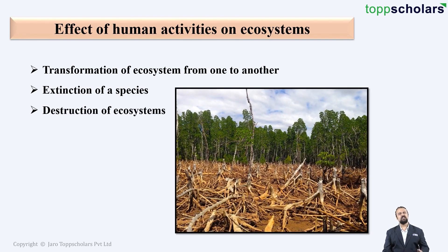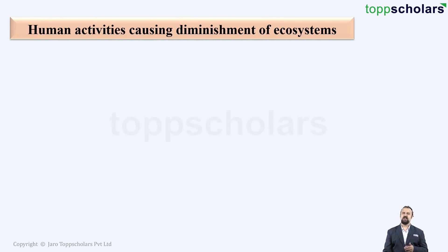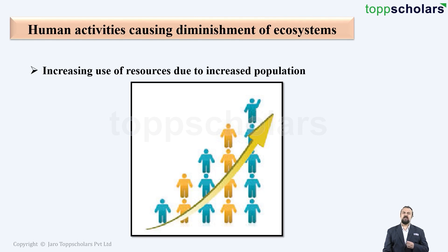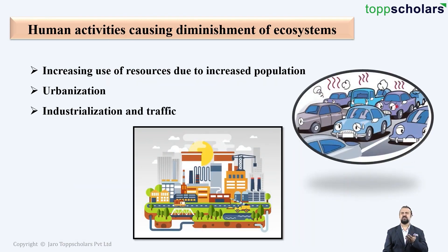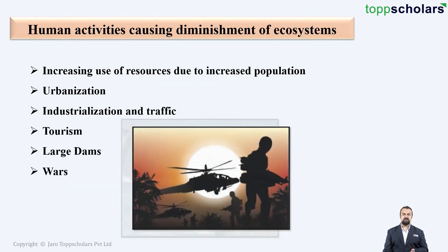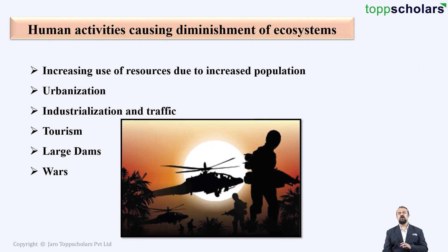Overall, this is the way by which humans are causing destruction of ecosystems. Let us take a look at the various activities which are causing this destruction. The increasing use of natural resources is due to the increase in population. Urbanization, industrialization, traffic, tourism, large dams, and wars are some examples of human activities causing the diminishment of ecosystems.